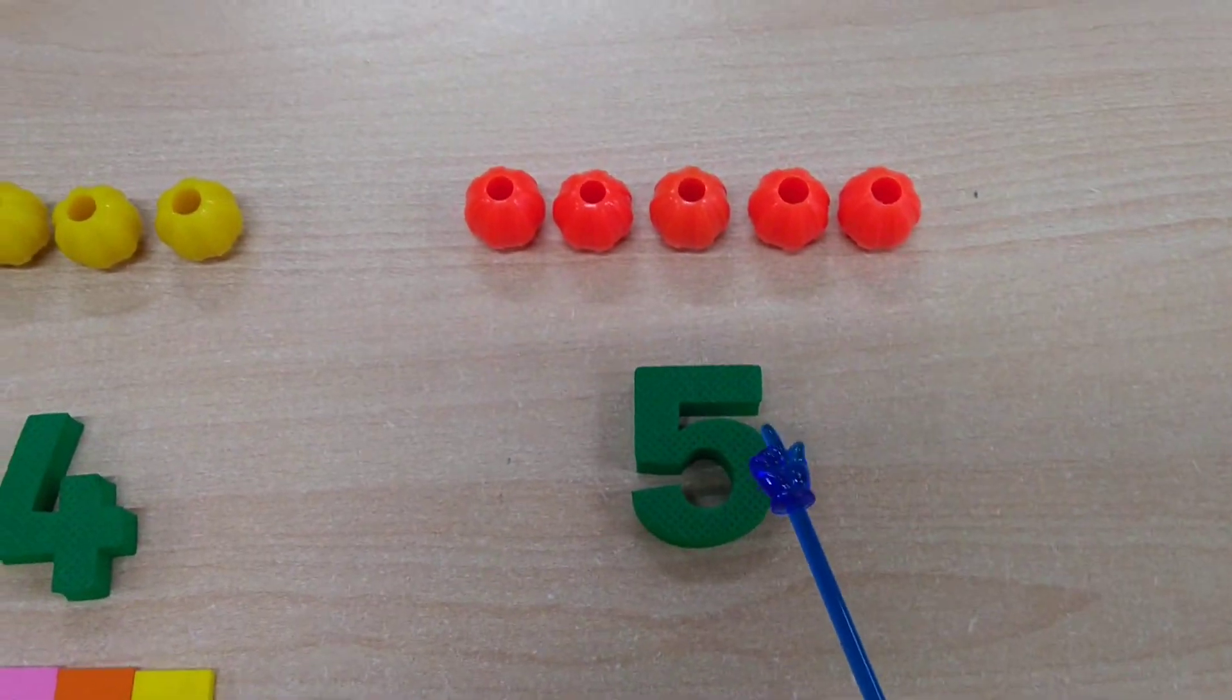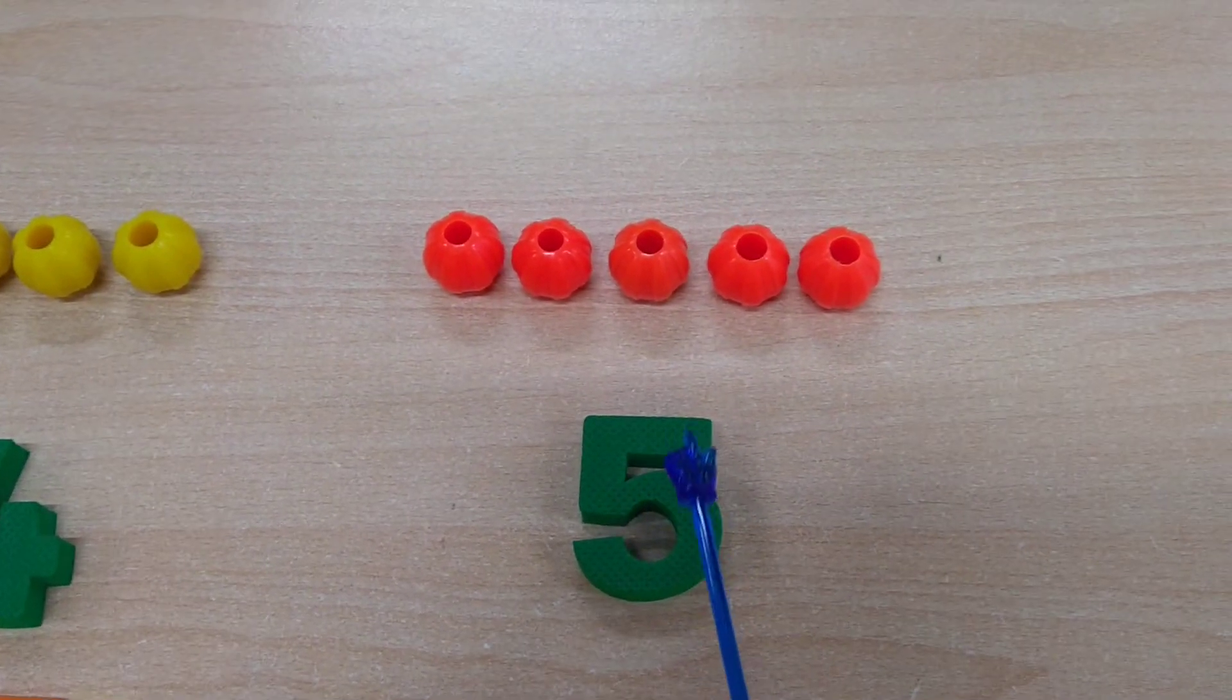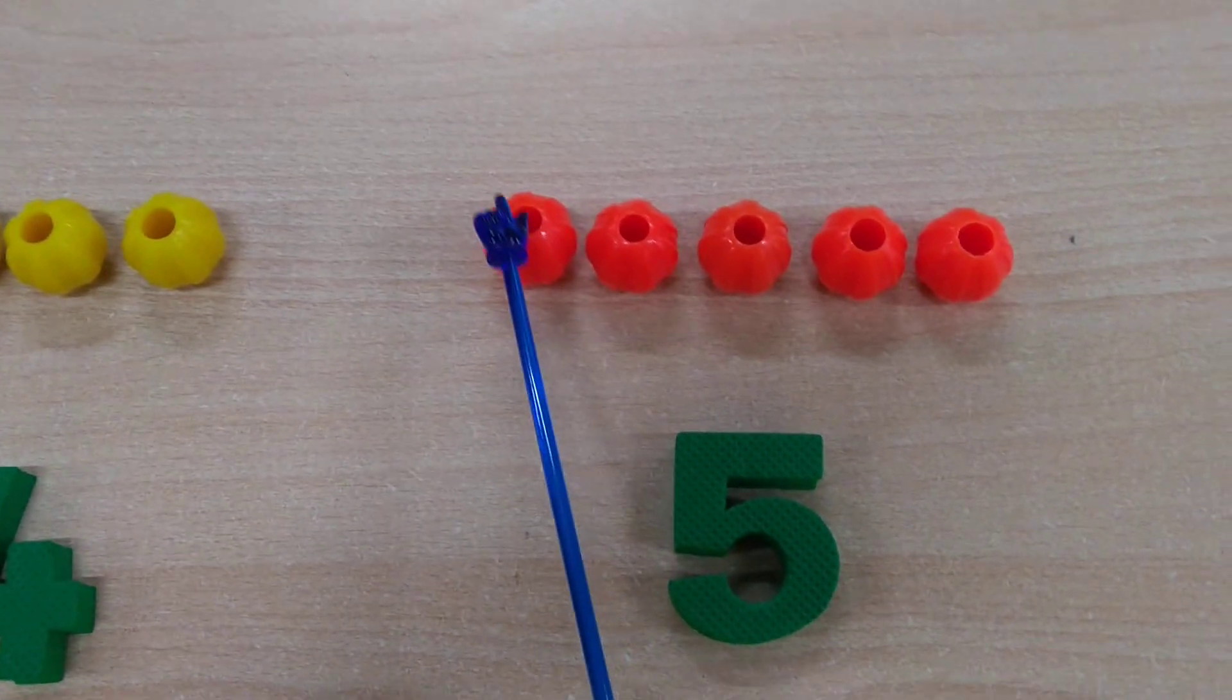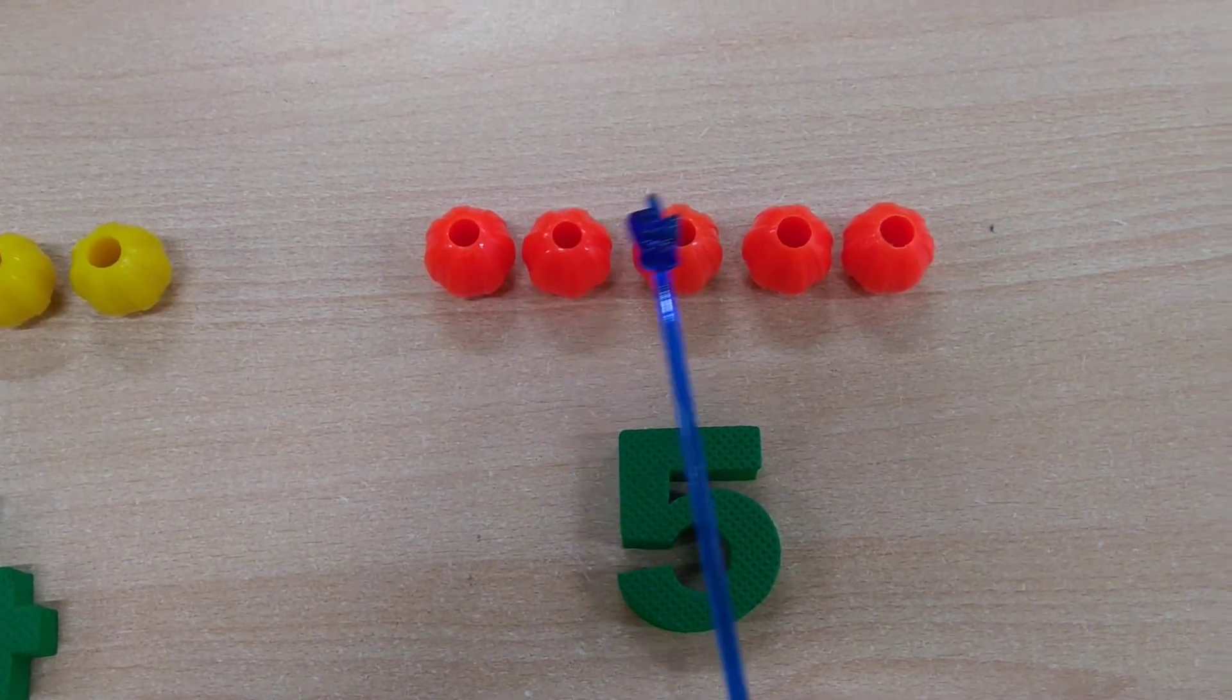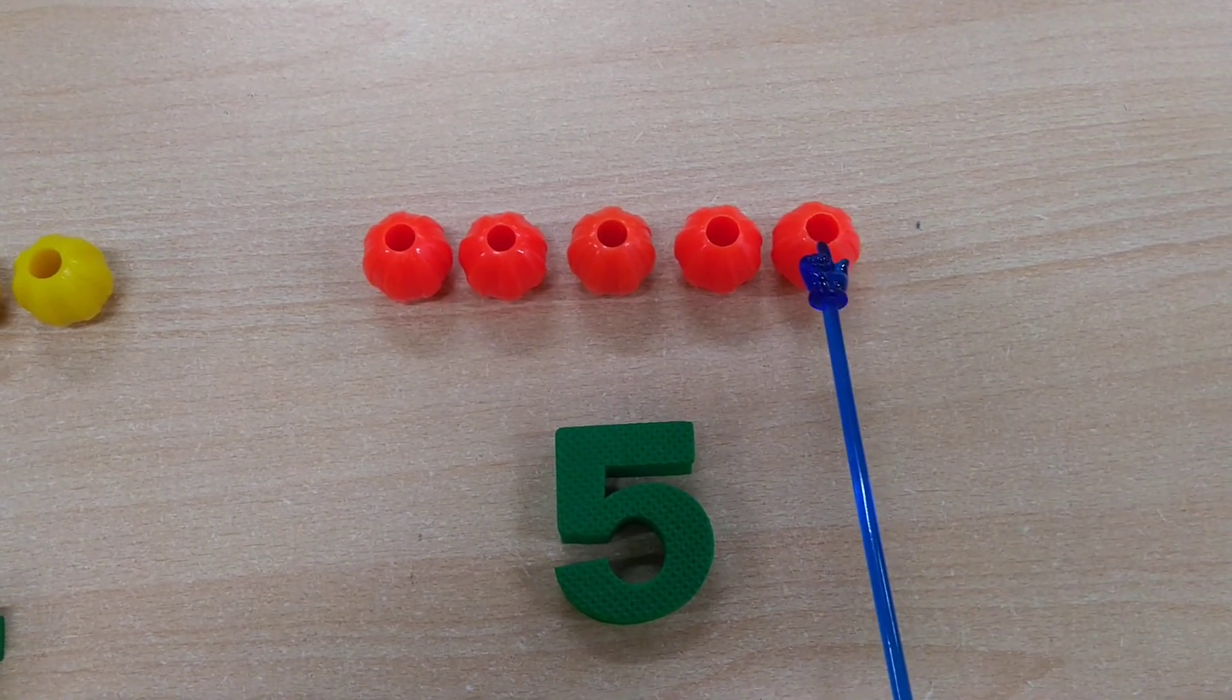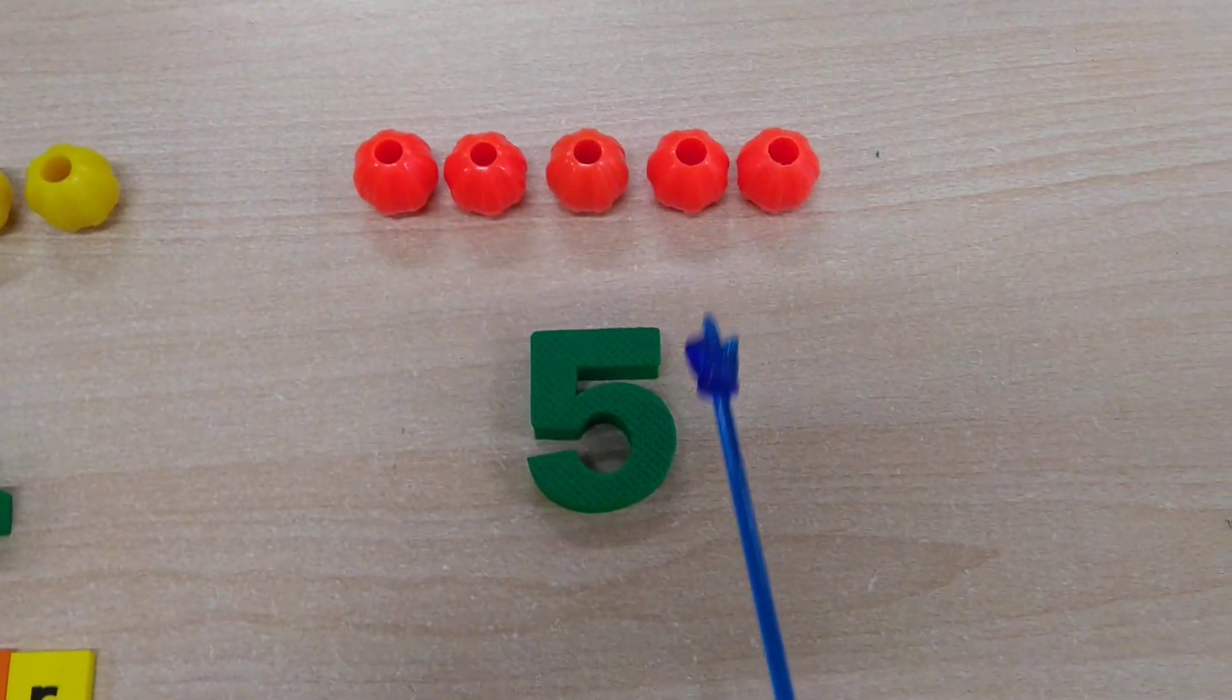Now we will learn the spelling of number 5. Which number is this? This is number 5. And how many beads are there on the table? 1, 2, 3, 4, 5. These are 5 beads and this is number 5.